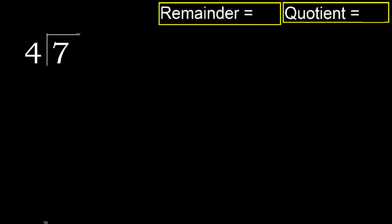7 divided by 4. 7 is not less. Therefore, with 7: 4 multiplied by which number is nearest to 7, but not greater?